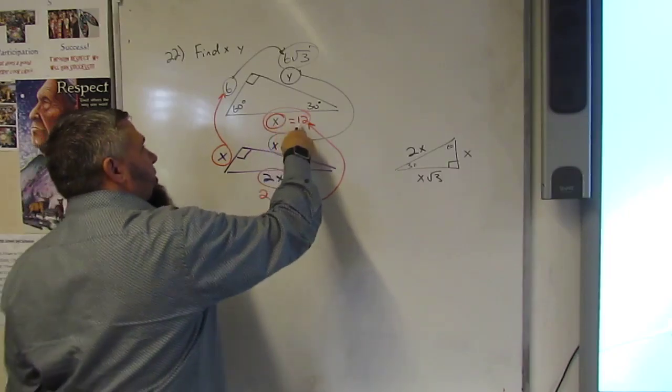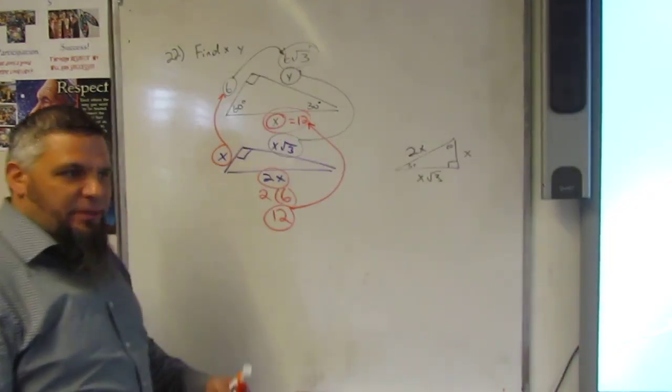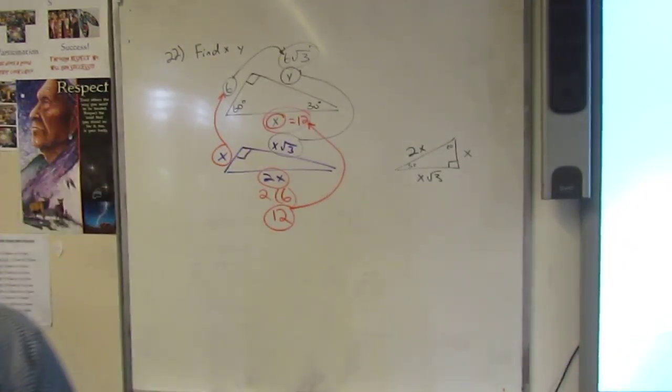So X is 12, and Y is 6 square root 3. Easy peasy. Lemon squeezy.